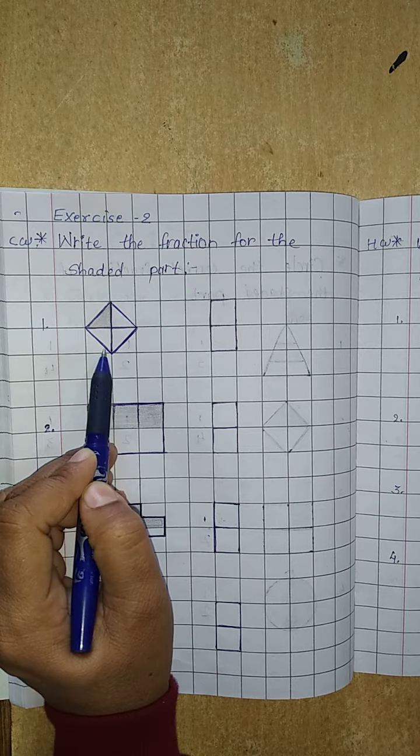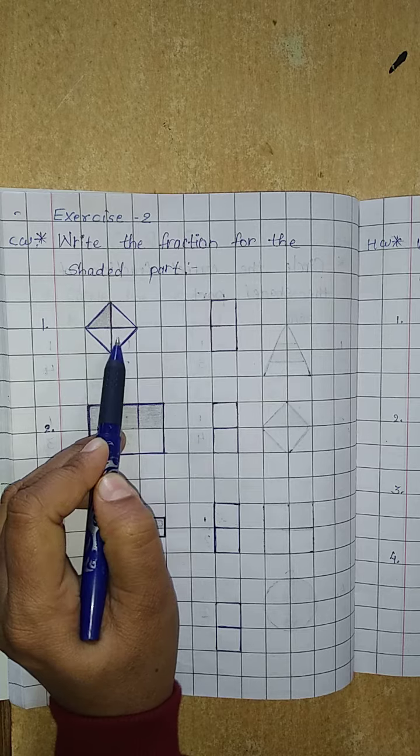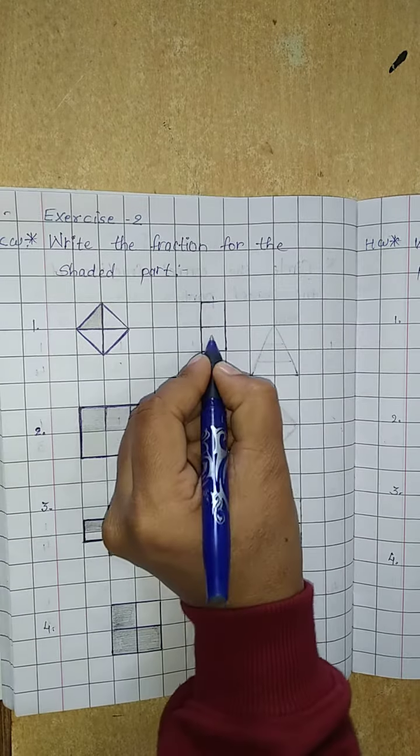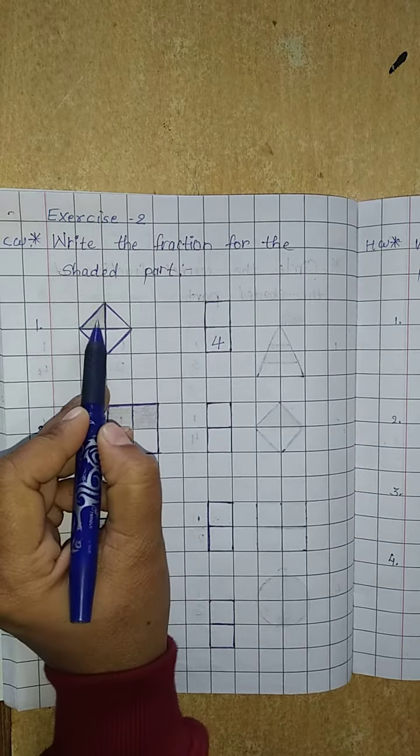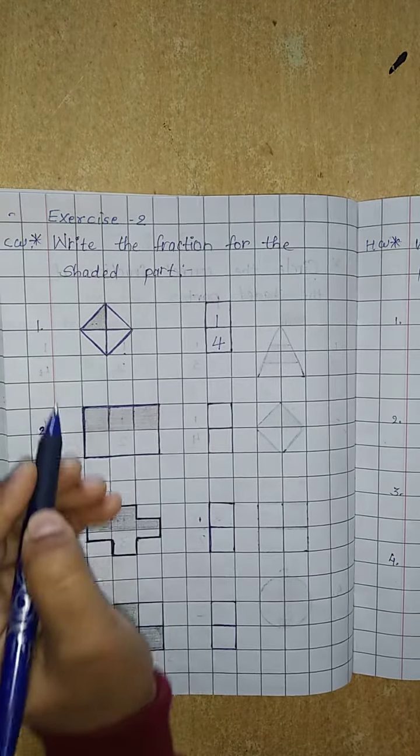Now here, how many parts of the whole? 1, 2, 3, 4. So we have to write the total parts on the downside. And how many shaded parts? 1. So write 1 upside. Here is 1/4.